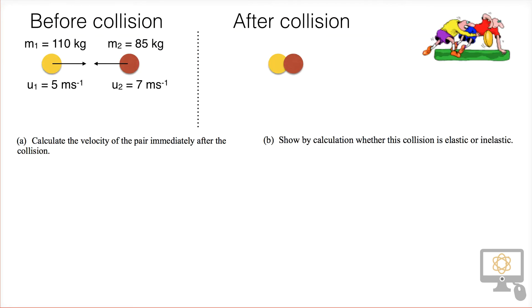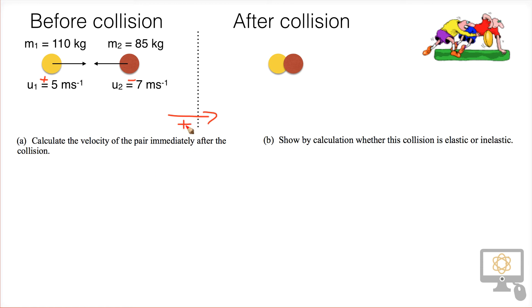I've redrawn the picture to help us visualize what's going on. Before the collision, the yellow guy is our 110 kilogram player — my spherical representation of a rugby player — traveling at five meters per second. He travels into the 85 kilogram guy moving in the opposite direction at seven meters per second. We are told to treat the direction the 110 kg player is moving as positive, so his velocity is positive and the other player's velocity is negative. That's very important throughout the entire calculation.